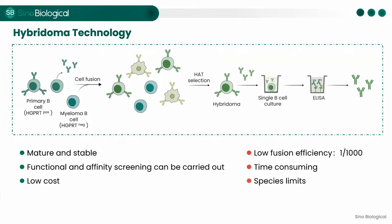The advantages of hybridoma are that it is a well-established methodology with a very high success rate. Functionality and affinity screening can be carried out along the experiment, and the cost is relatively low since no special equipment is required. However, there are disadvantages. Cell fusion efficiency might be low — the success rate of fusion is merely one in a thousand even for electrofusion. Suitable myeloma cell lines are not always available, limiting the antibody species we can develop. Also, the life cycle is long, generally taking two to three months from cell fusion to obtaining positive clones.